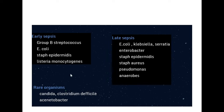Rare organisms that can cause newborn sepsis include Candida, Clostridium difficile, and Acinetobacter. If rare organisms are affecting a newborn, you must suspect an underlying immunodeficiency. Although neonatal immunity is anyway deficient, some children may have a genetically transmitted immunodeficiency condition that makes them susceptible to these rare organisms.